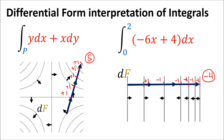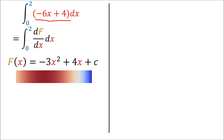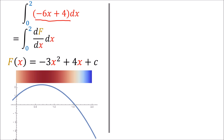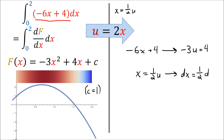To illustrate coordinate independence, let's consider a change of variables where u equals 2x, or equivalently x equals one-half u. The expression negative 6x plus 4 becomes negative 3u plus 4. Since x equals one-half u, we also get dx equals one-half du. The endpoints x equals 0 and x equals 2 become u equals 0 and u equals 4.